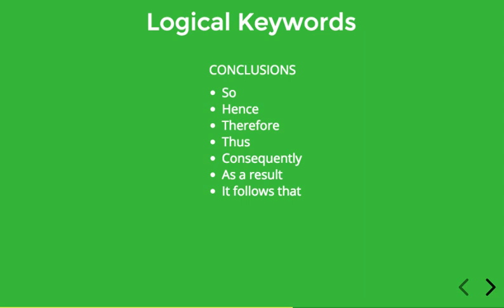Hopefully you can get the intuition that when you see these words, what is to come is something that has been inferred from what came before — it's the result of an inference, the result of deduction. So keep an eye out for these as we analyze English sentences and it'll make the task a lot easier.